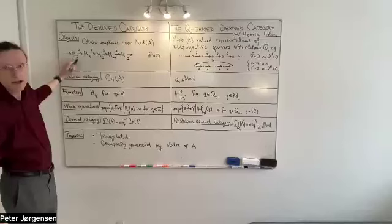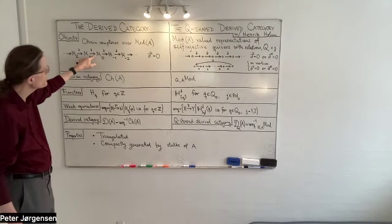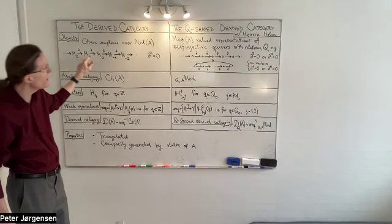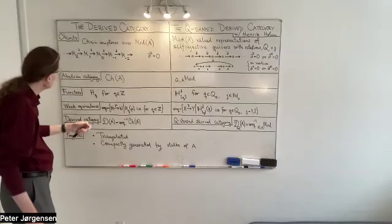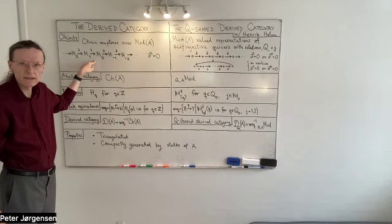You've got a homomorphism, a homomorphism, and so on and so forth. If you compose two consecutive homomorphisms, you must get zero, and that's conveniently summarized by that equation.